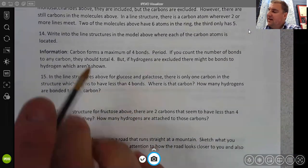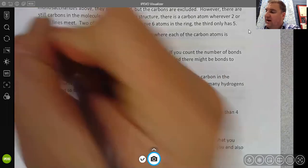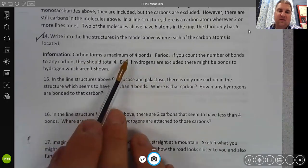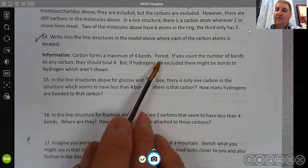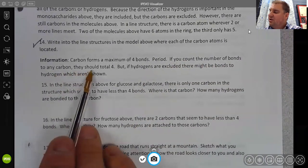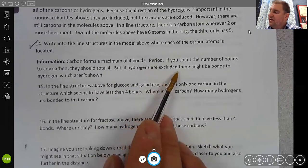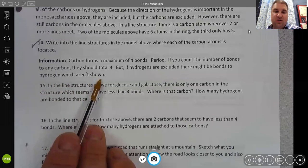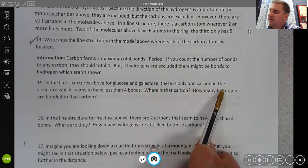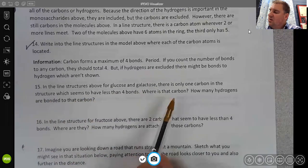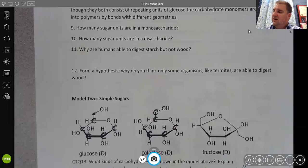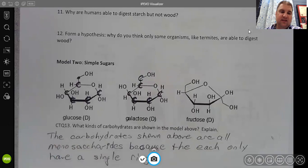When we look at molecules, we want to be able to start seeing those corners as carbon atoms. I'm not going to fill those in on fructose for now, although you should have them filled in on your own packet. When you get there, it's not a question, it's asking you to do something to interact with the packet. You might check that as being done. The next set of information: carbon forms a maximum of four bonds, period. Carbon cannot form more than four bonds ever. If you count the number of bonds to any carbon, they should total four. But if hydrogens are excluded, there might be bonds to hydrogen which aren't shown. In the line structures above for glucose and galactose, there is only one carbon in the structure which seems to have less than four bonds. Where is that carbon? How many hydrogens are bonded to that carbon?